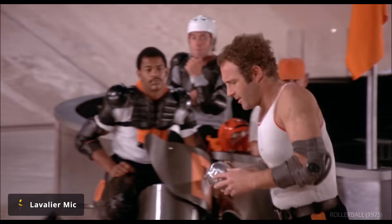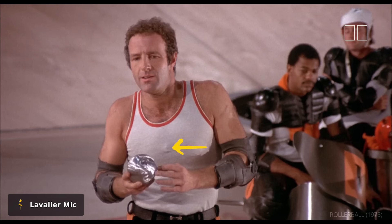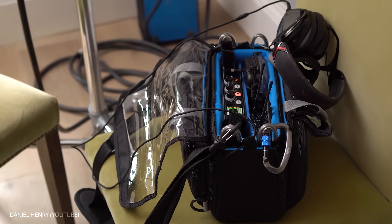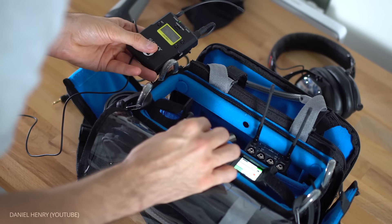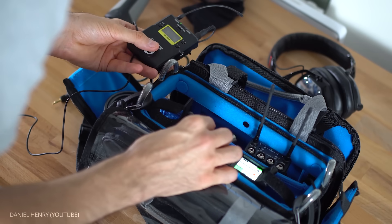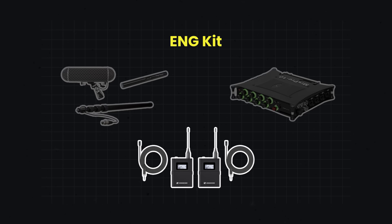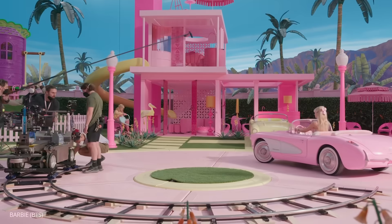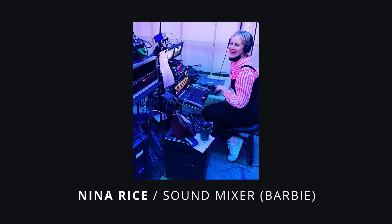However, an omnidirectional pattern also means a mixer needs to be mindful of avoiding the noise of clothing. On smaller sets, a sound mixer may have what is called an ENG style kit, otherwise referred to as two and a boom. This setup includes a shotgun microphone, two lavaliers, and a recorder. On a higher budget set, a sound mixer will typically have a much wider array of equipment.